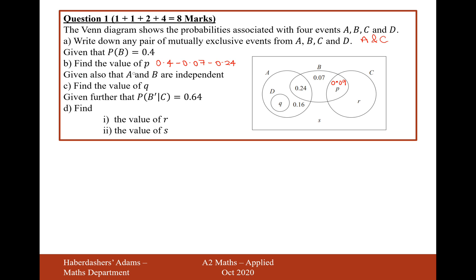Moving on, given also that A and B are independent, find the value of Q. Now what independence means, this is part C, is that the probability of A multiplied by the probability of B equals the probability of A and B. There's another rule, but this is the best rule to use for this one.